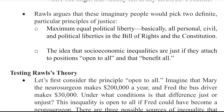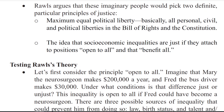Rawls argues that these imaginary people would pick two definite particular principles of justice: maximum equal political liberty — basically all personal, civil, and political liberties in the Bill of Rights and the Constitution — and the idea that socioeconomic inequalities are just if they attach to positions open to all, and that benefit all.